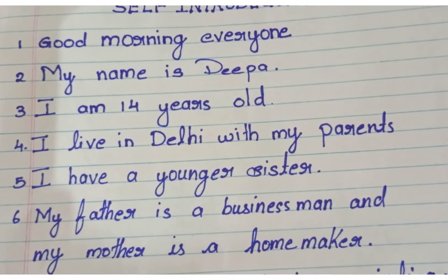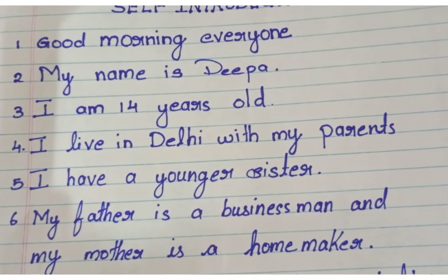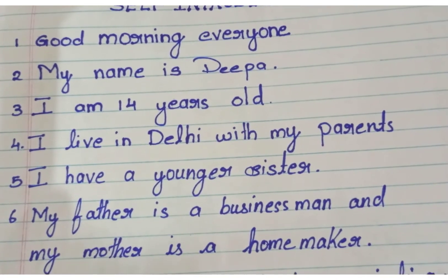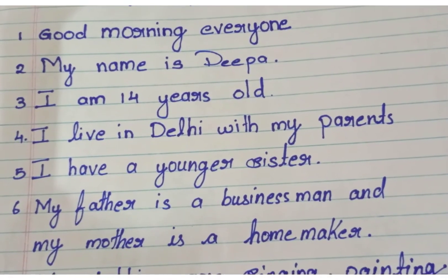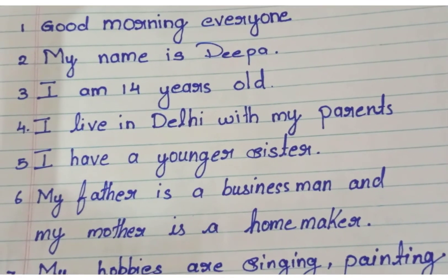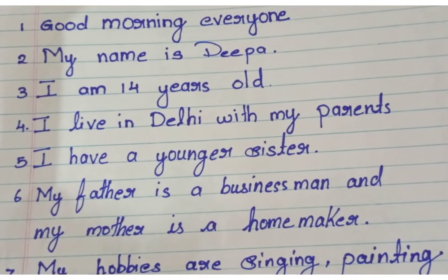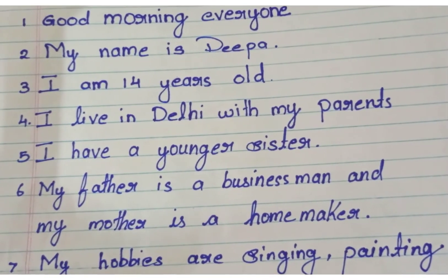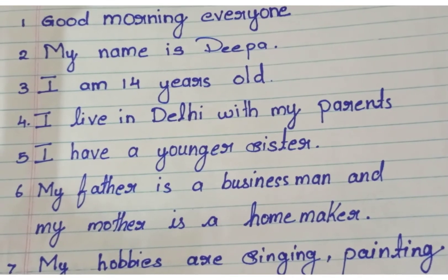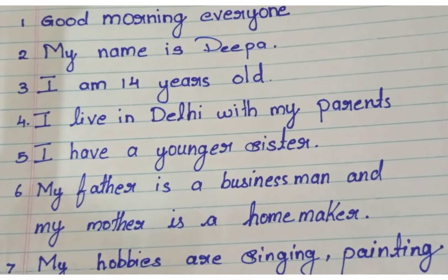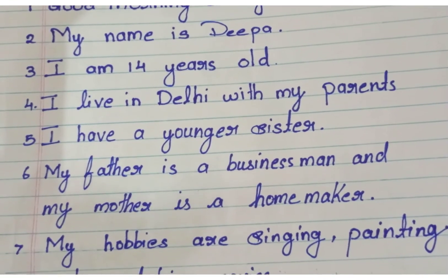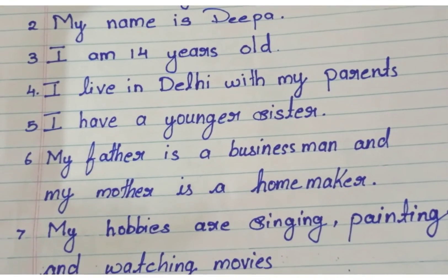Change whatever applies to you — elder sister, elder brother, younger brother, and so on. Sixth, my father is a businessman. Seventh, my mother is a homemaker. Change the occupation of your father and mother accordingly.